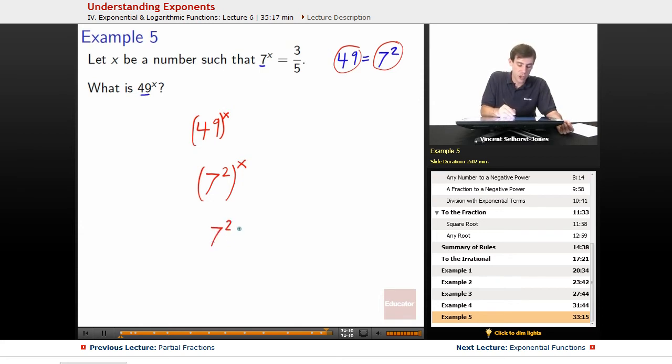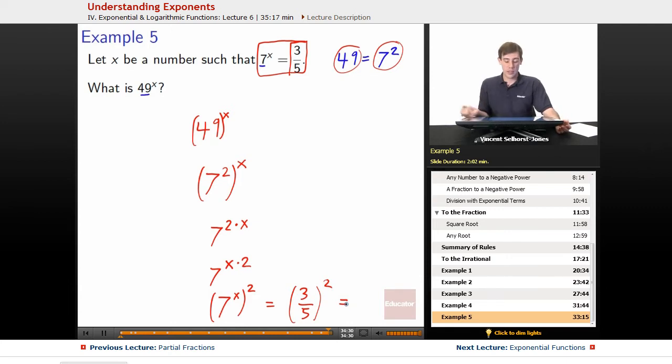That means 7 to the 2 times x. But we could also write that as 7 to the x times 2, which we could then write as 7 to the x all raised to the 2, which would be, hey, we know what 7 to the x is. It's 3 fifths. So we've got 3 fifths all raised to the 2, which means we've got 9 over 25, because we square the 3 and we square the 5. 3 fifths squared means that the square will go on to the 3, go on to the 5.